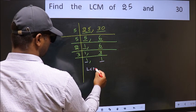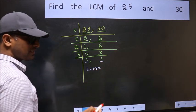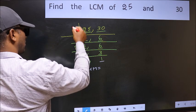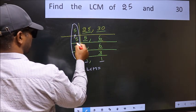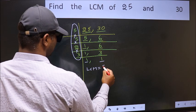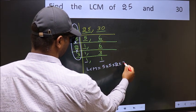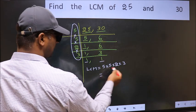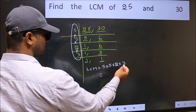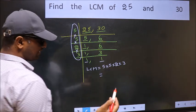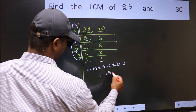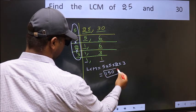So our LCM is the product of these numbers, that is 5 times 5 times 2 times 3. When we multiply these numbers, we get 150 as our LCM.